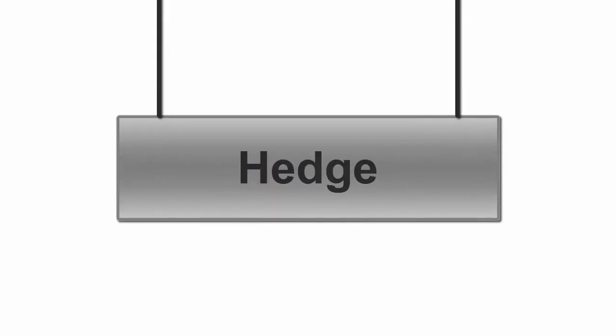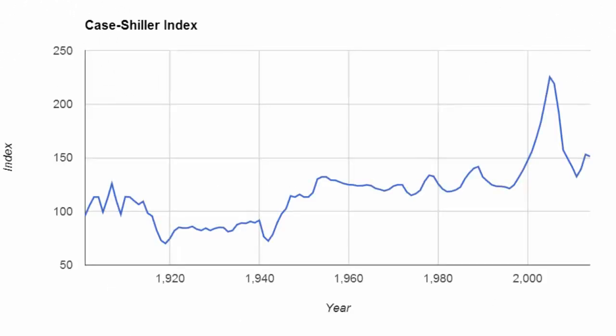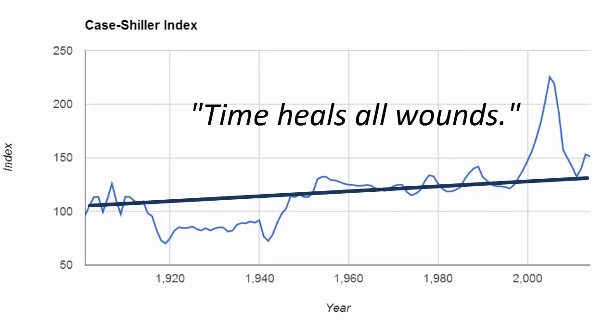That hedge is time. According to the famous Case-Shiller Index, given enough time, housing prices will, on average, track inflation. Therefore, in most cases, you can avoid a loss due to short-term depressed housing prices by simply holding onto your home longer.